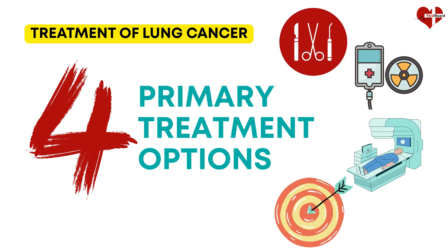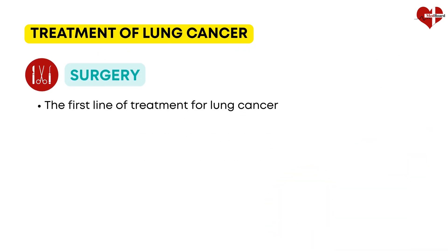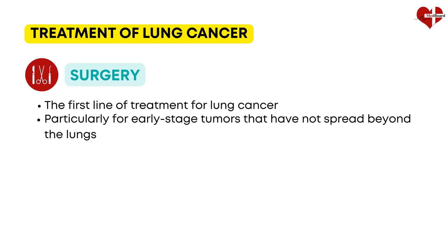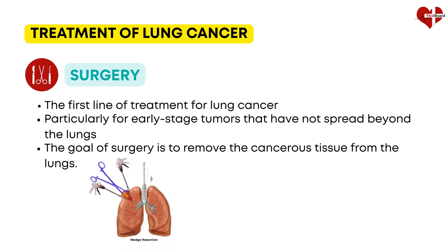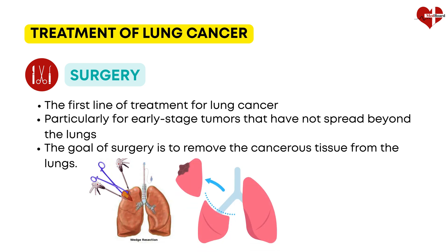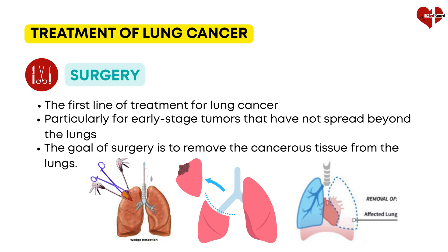Surgical intervention is often the first line of treatment for lung cancer, particularly for early-stage tumors that have not spread beyond the lungs. The goal of surgery is to remove the cancerous tissue. Different types of surgical procedures can be performed, including wedge resection — removal of a small portion of the lung — lobectomy — removal of a lobe of the lung — and pneumonectomy — removal of an entire lung. The appropriateness of surgery depends on the size and location of the tumor, as well as the overall health of the patient.